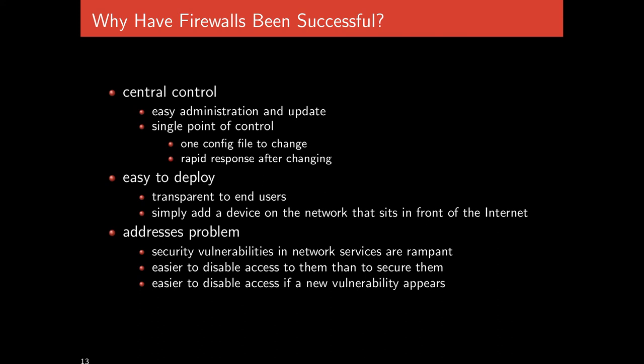Why have firewalls been so successful? One aspect is central control that's easy to administrate — easy to update with a single point of control. If something needs to change, you update one configuration file rather than thousands of computers, allowing rapid response. For example, if a vulnerability was discovered in a popular HTTP server, you could immediately disallow HTTP traffic, fix and update the affected machines, stop their services, and then re-allow HTTP traffic — responding quickly to a new threat.